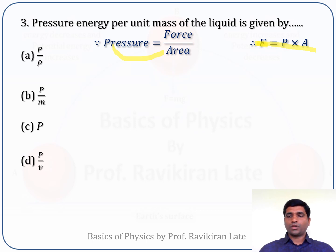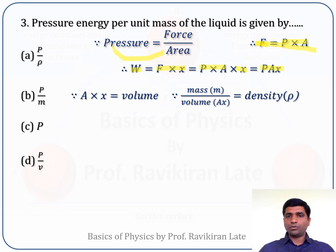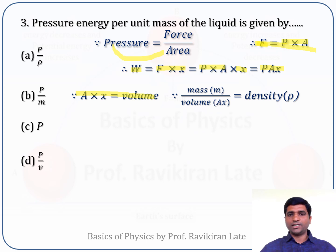Energy and work done have the same dimensions. Work done equals force times displacement. Since force equals pressure times area, work done W = pressure × area × x = P × A × x. We also know that area times x equals volume, so W = P × volume.